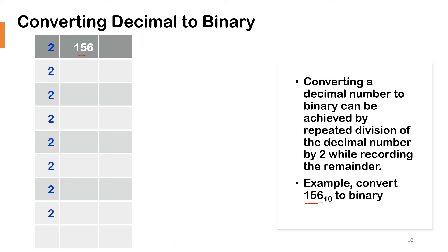So 156 divided by 2, the result would be 78, and there's no remainder, so it's 0. 78 divided by 2, that would be 39. Again, there's no remainder, the remainder is 0.